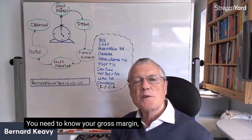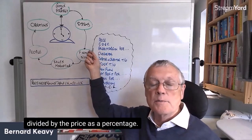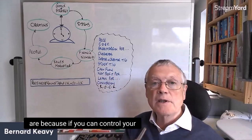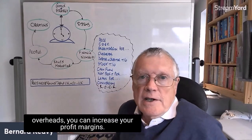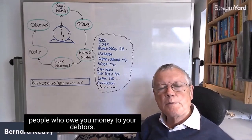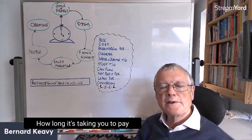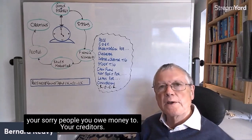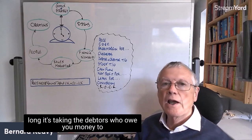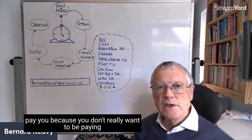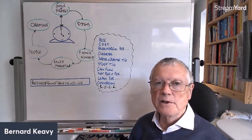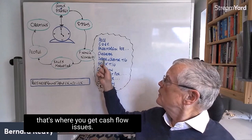You need to know your gross margin, which is the difference between these two divided by the price as a percentage. You need to know what your overheads are, because if you can control your overheads, you can increase your profit margins. You need to know how long it's taking for people who owe you money — your debtors — and how long it's taking you to pay people you owe money to — your creditors — compared to how long it's taking the debtors to pay you, because you don't want to be paying your creditors quicker than your debtors are paying you. That's where you get cash flow issues.